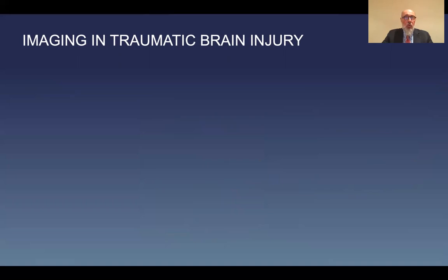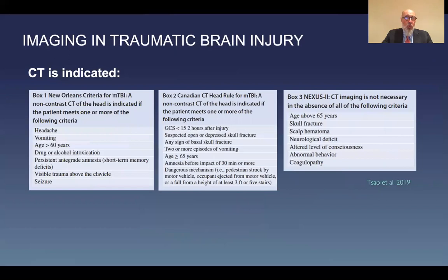For imaging in traumatic brain injury, we usually start with CT. CT has been well-documented since several decades to have a very important role in managing patients with traumatic brain injury. There are many excellent guidelines and charts that help us decide when CT is indicated — for example, the New Orleans criteria for mild TBI, the Canadian CT head rule for mild TBI, and the Nexus 2 — all of these have been very well-documented.